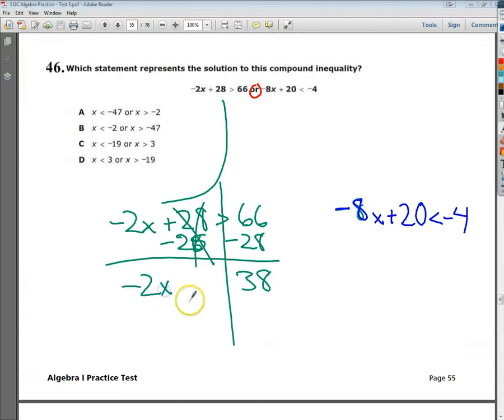Then I bring down my negative 2x. I'm going to divide by negative 2. I tend to, in the last step, if I'm dividing or multiplying, circle that number.